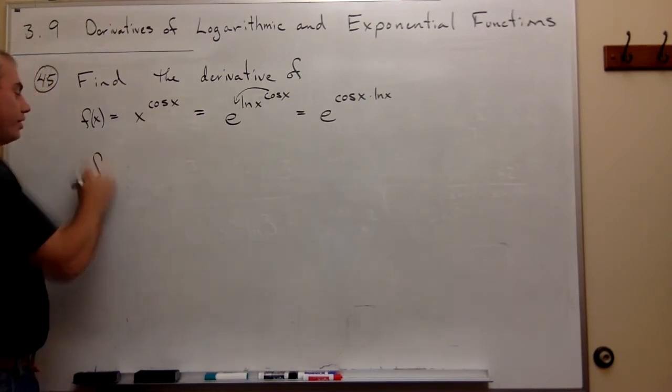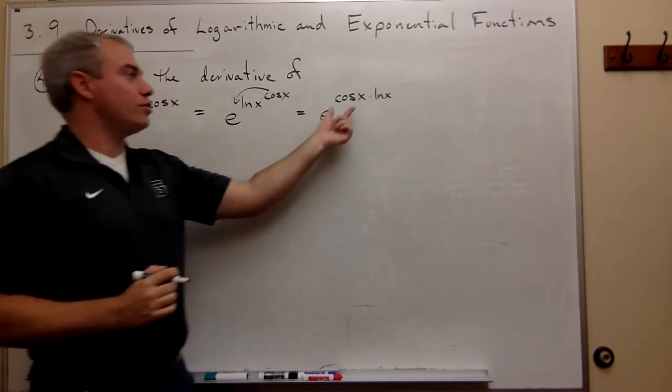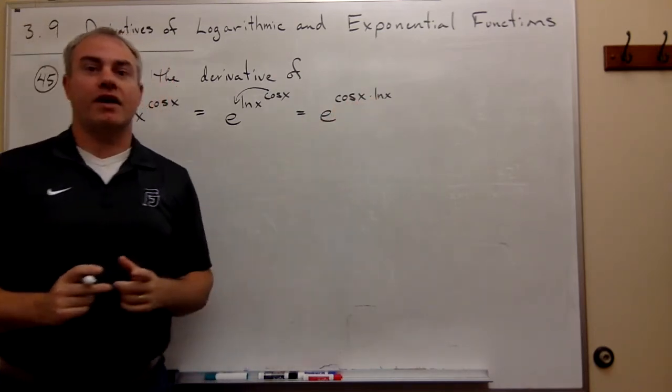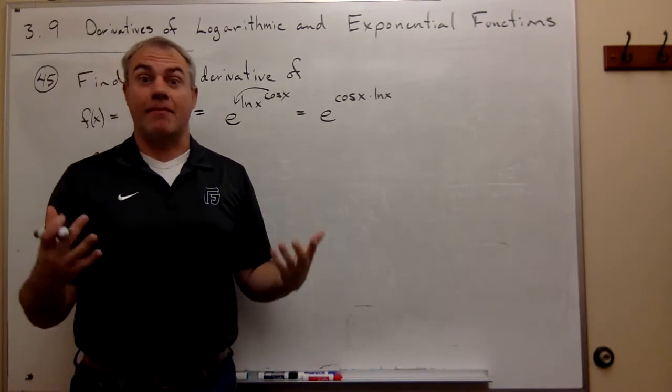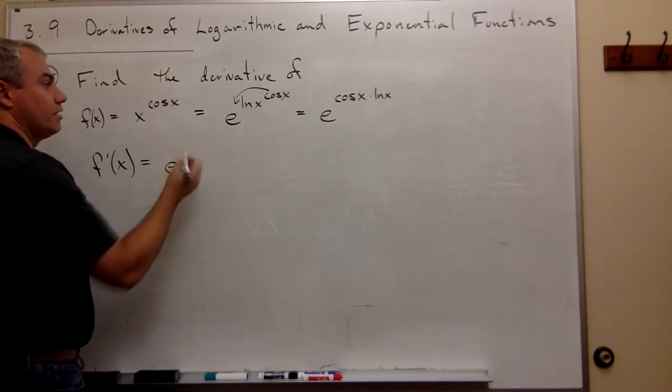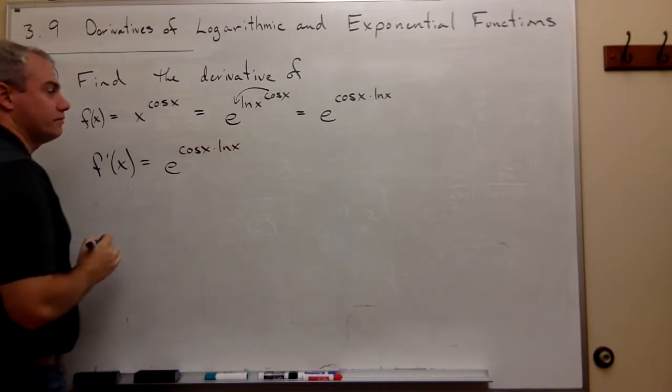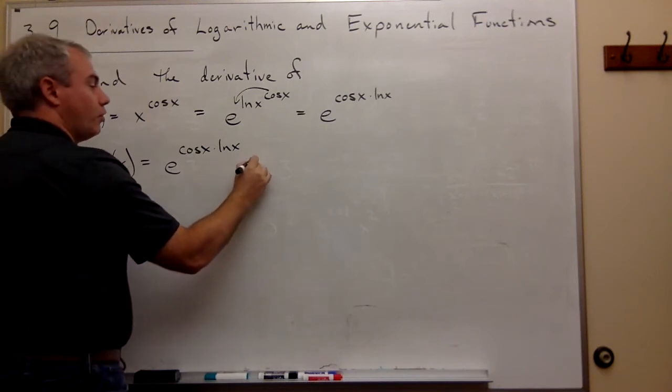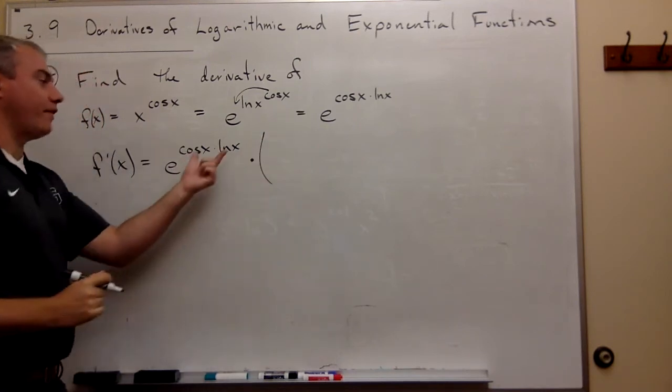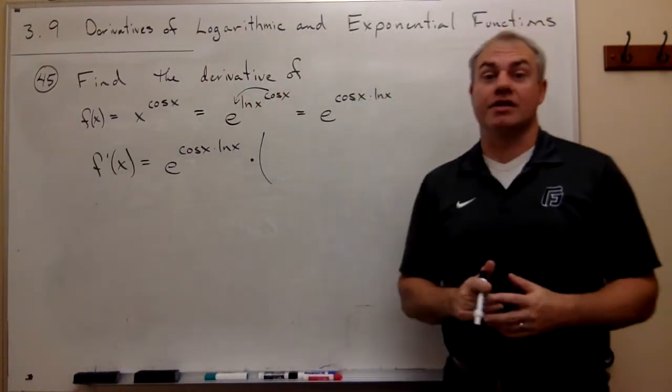So when I take the derivative f prime of x, when I have e to a power, the first thing that I write down is just e to that power again. So I'm going to write down that this is e to the cosine of x times ln of x. Then I multiply that by the derivative of the power.